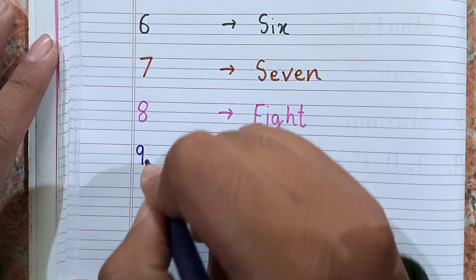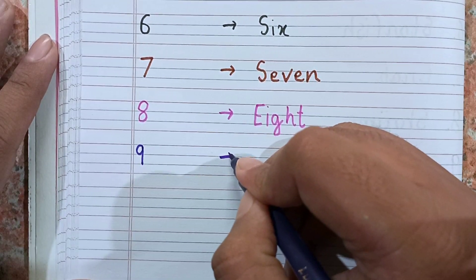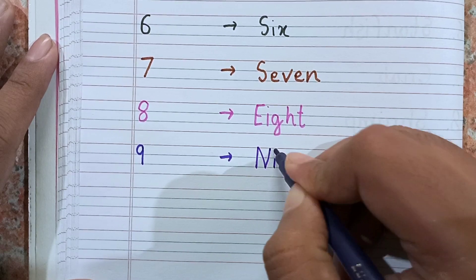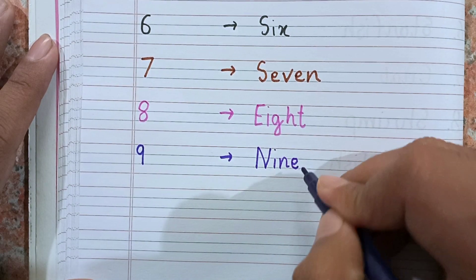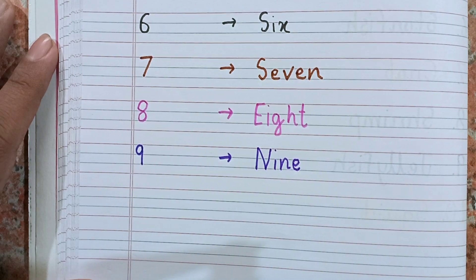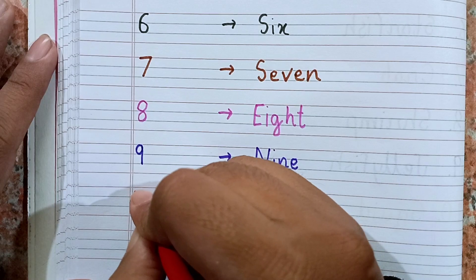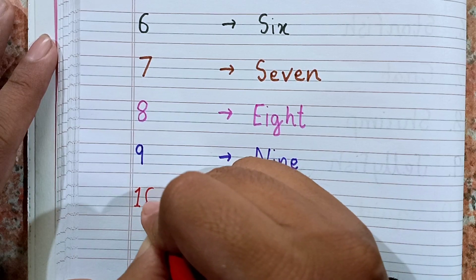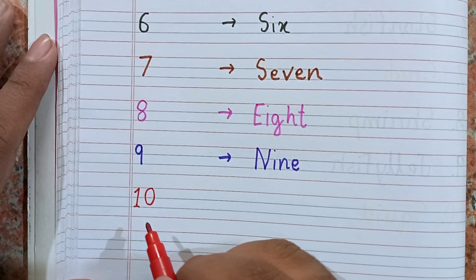Now I am going to write 9. This is 9, and the spelling of 9 is N-I-N-E. After 9, the next number will be 10. Now I am writing 10: 1-0, 10.